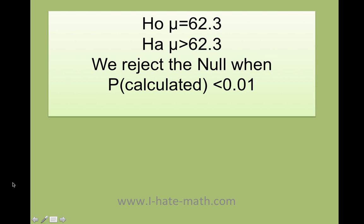Okay. So going back to our problem, we have that the mu equals 62.3, and we're testing that it's greater than 62.3. Remember, if the p that we calculated is less than the significant level, in this case 0.01, then we're going to reject the null.